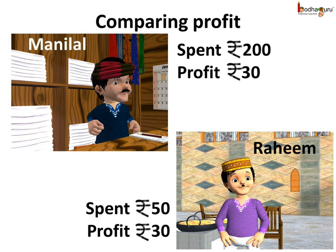We see Rahim spent much lesser than Manilal. Manilal spent rupees 200 and Rahim spent rupees 50, but both earned the same profit of rupees 30.